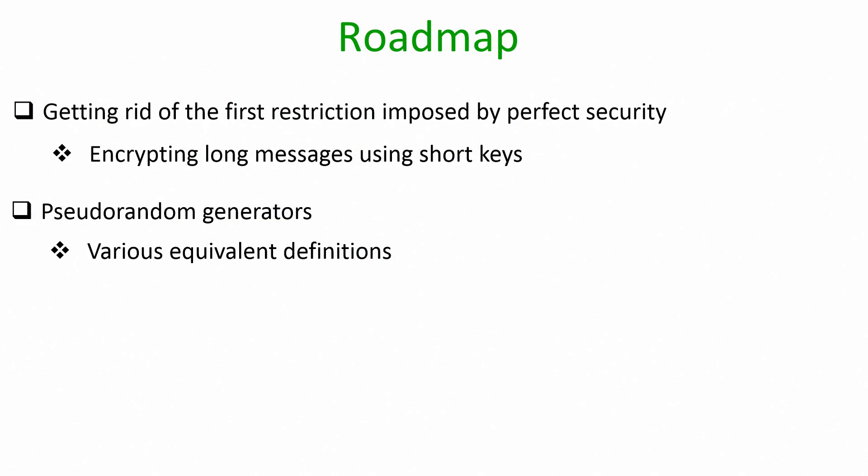Hello everyone, welcome to lecture 8. The plan for this lecture is as follows: we will discuss how to get rid of the first restriction imposed by perfect secrecy, namely we will discuss how to encrypt long messages using short keys. For this we will introduce our first primitive in the computationally secure world, namely pseudo random generators, and we will discuss various equivalent definitions for pseudo random generators.